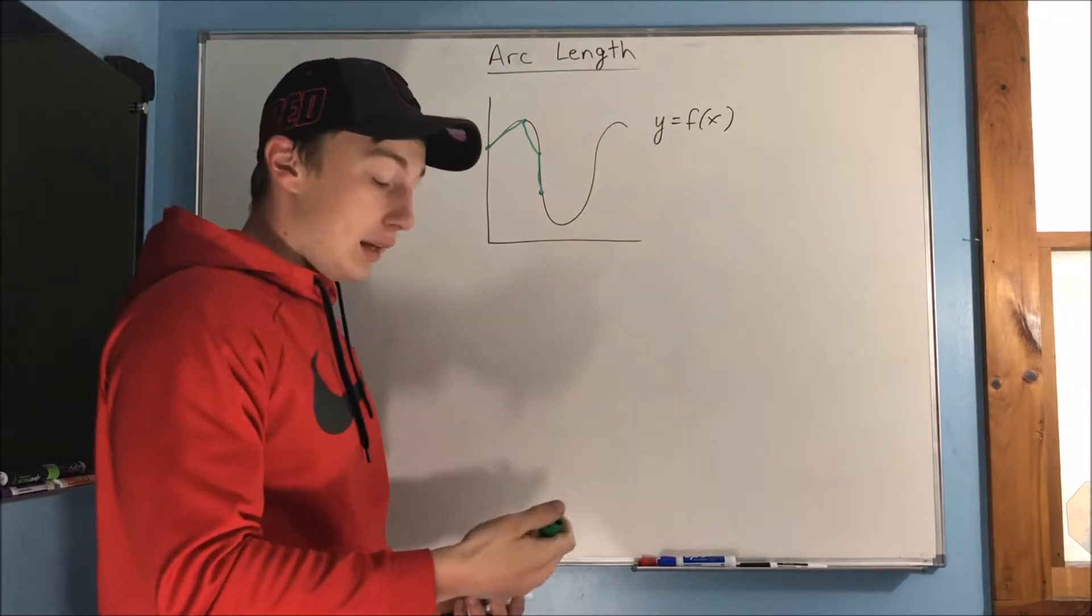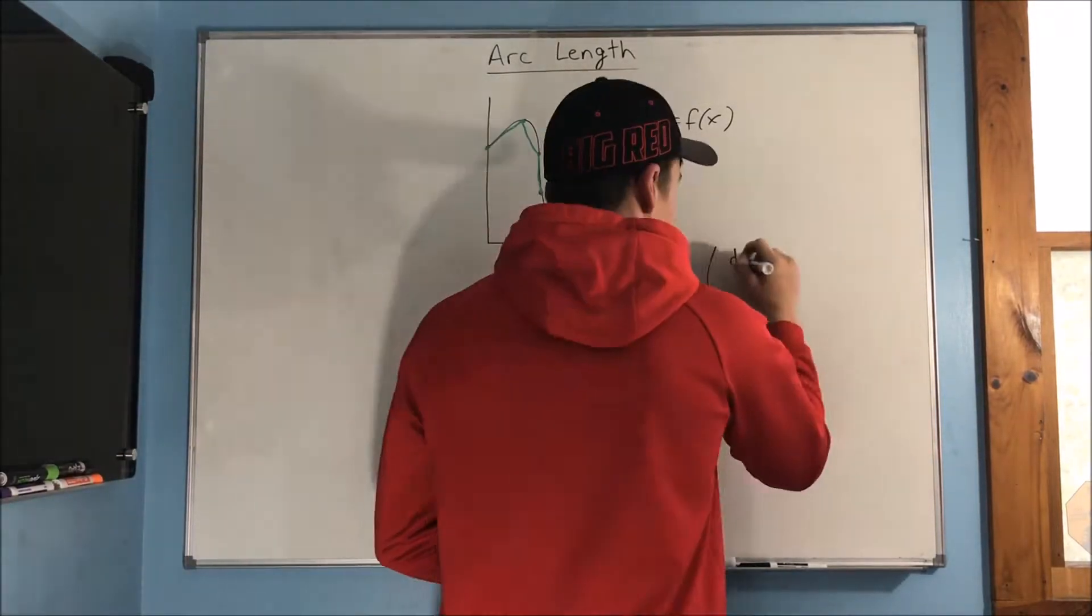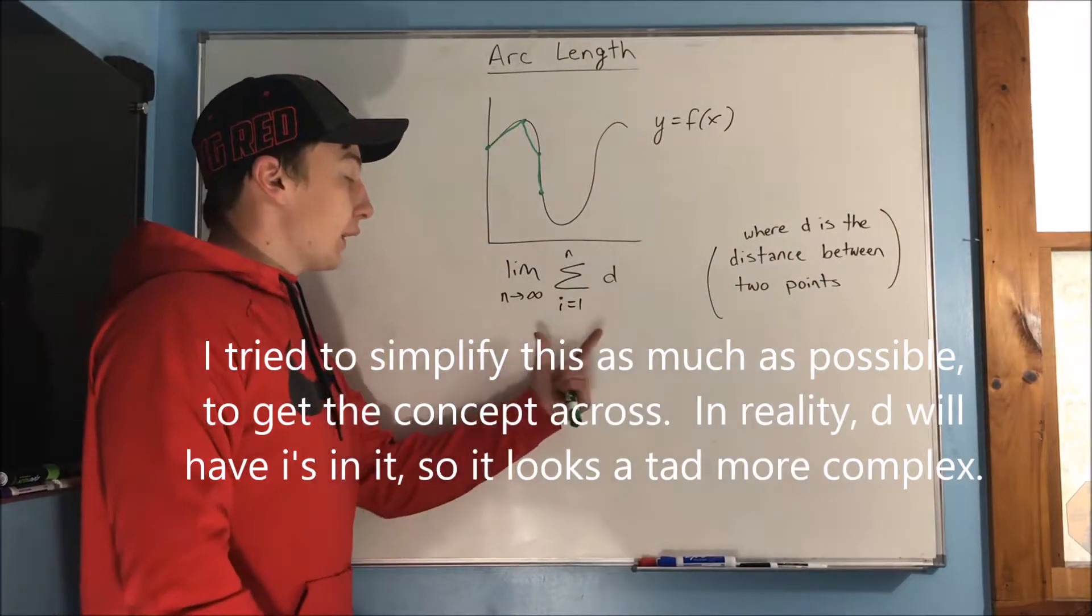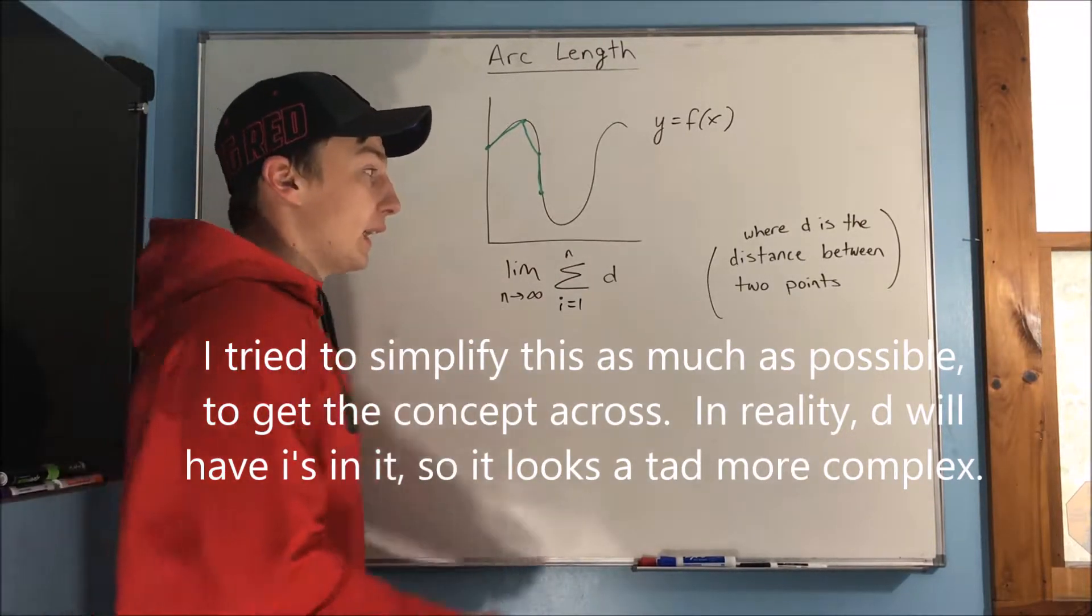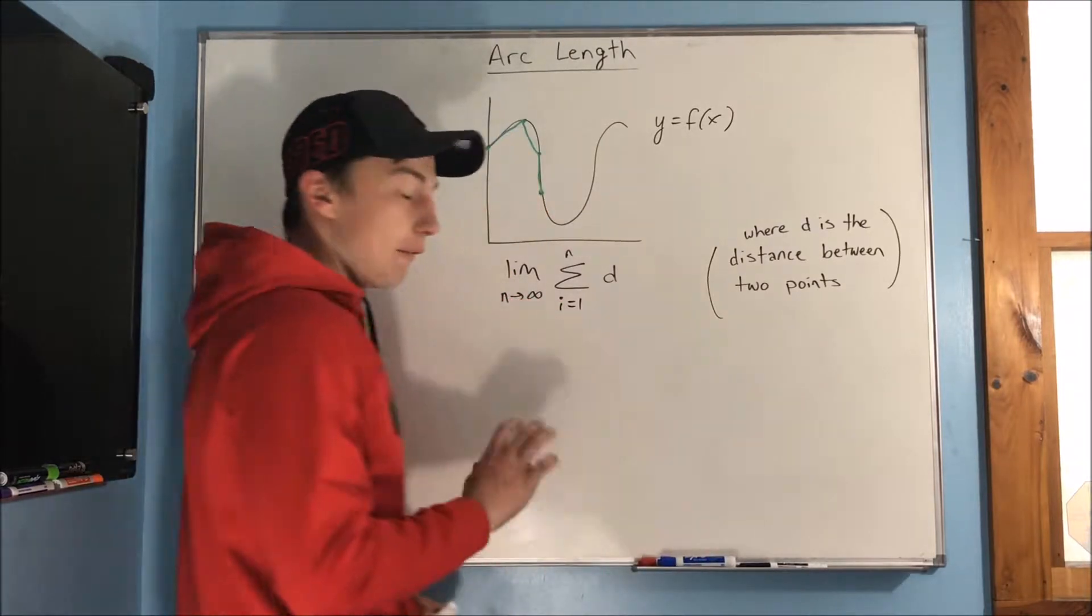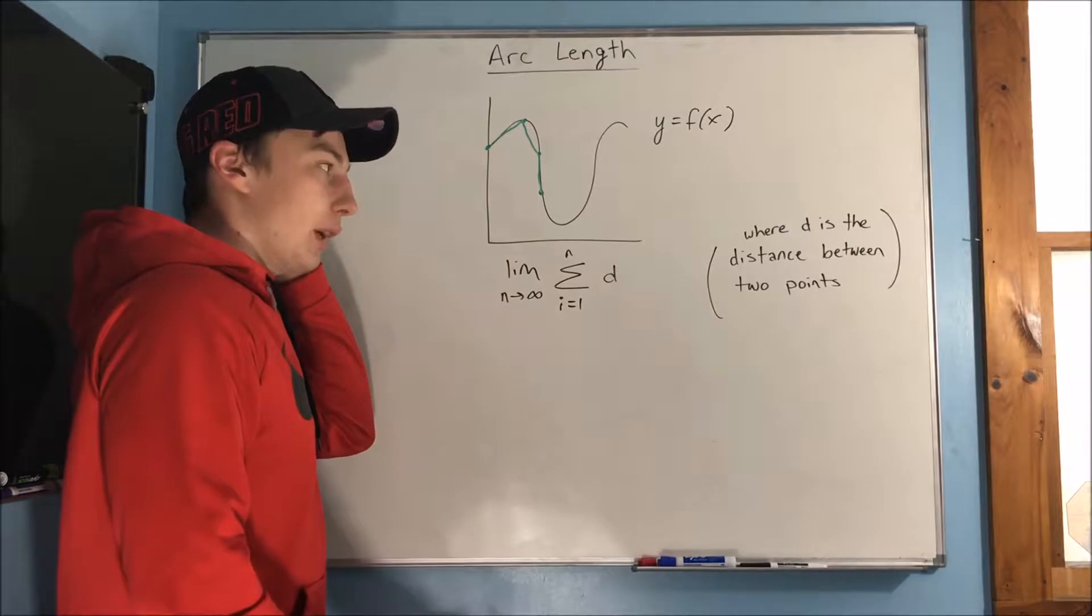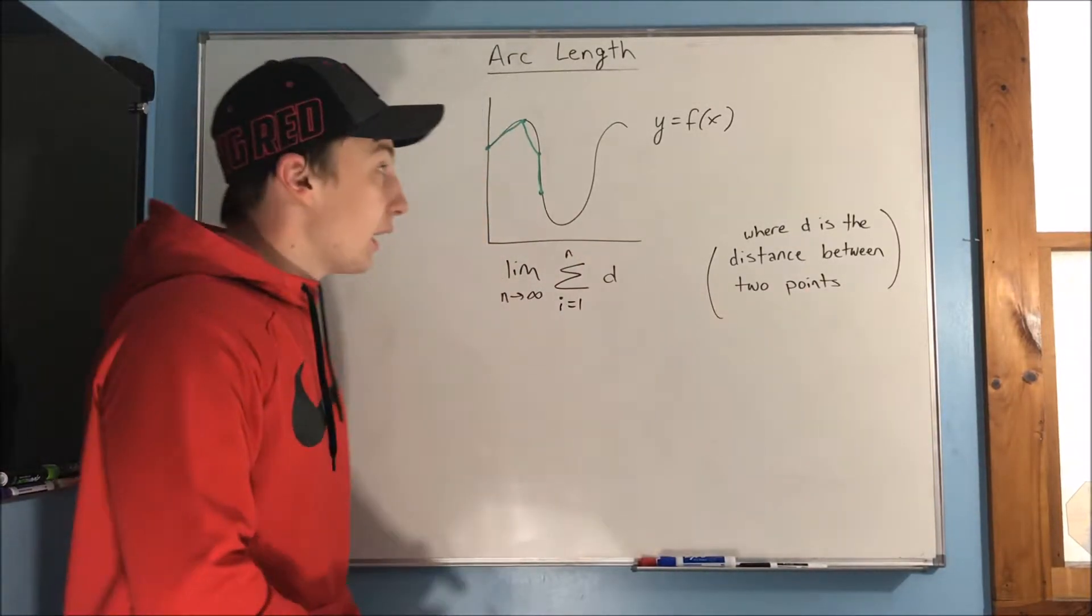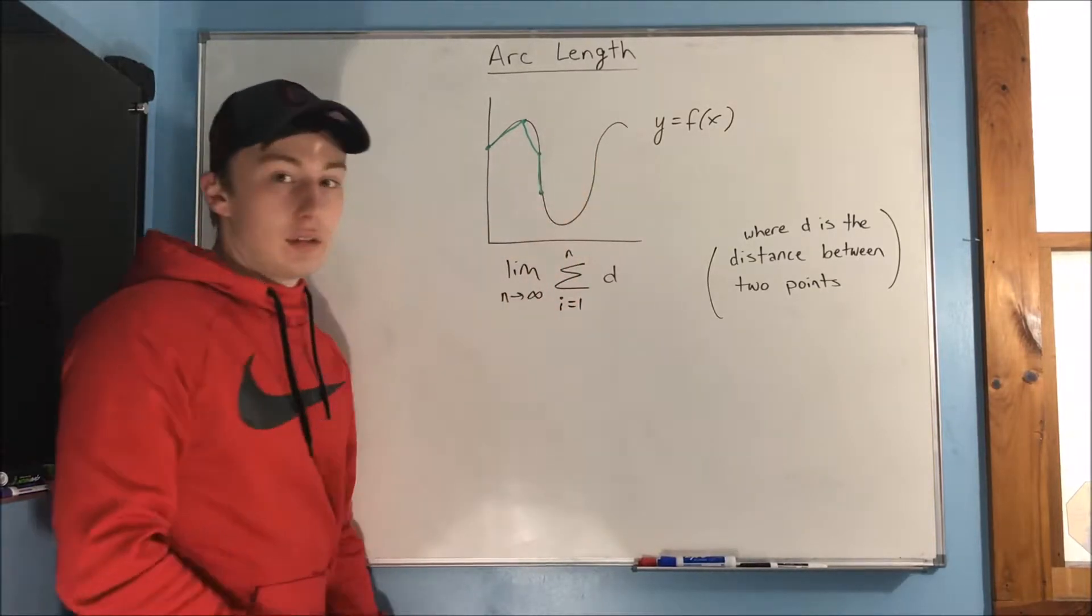So you end up with a pretty familiar limit formula. The limit as n approaches infinity, the sum from i equals 1 to n of d, and I wrote d as the distance between two points. Now the textbook is going to give you probably a large formula, but really, I mean, just understand that d is the distance between two points. It's whatever that infinitesimally small length is. That's d.